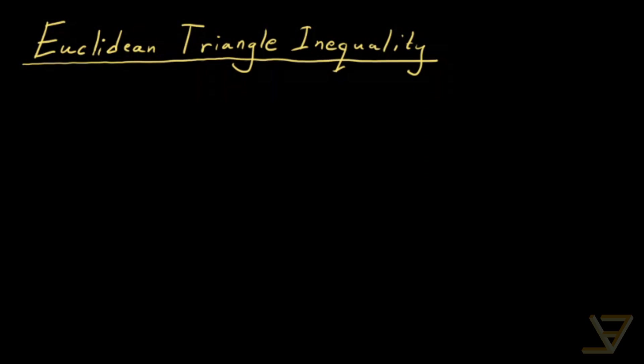First of all, suppose we have a vector v in n-dimensional Euclidean space with components a₁, a₂, all the way through to aₙ. And suppose we have a vector w with components b₁, b₂, all the way through to bₙ. These are both elements of Euclidean n-dimensional space.